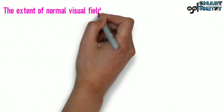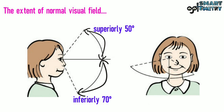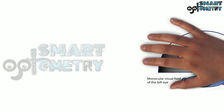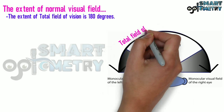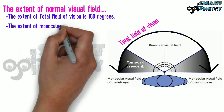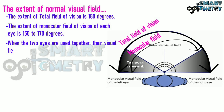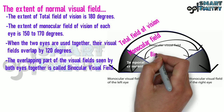The extent of the total field of vision is 180 degrees. The extent of the monocular field of vision of each eye is 150 to 170 degrees. When the two eyes are used together, their visual fields overlap by 120 degrees. The overlapping part of the visual fields seen by both eyes together is called the binocular visual field. Here you can see the binocular visual field.